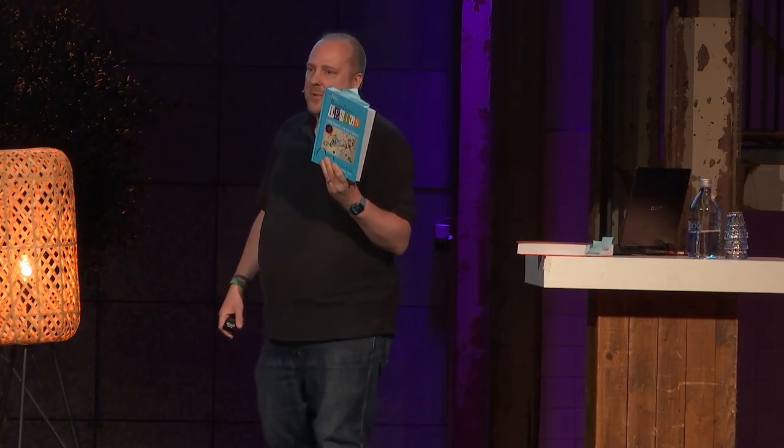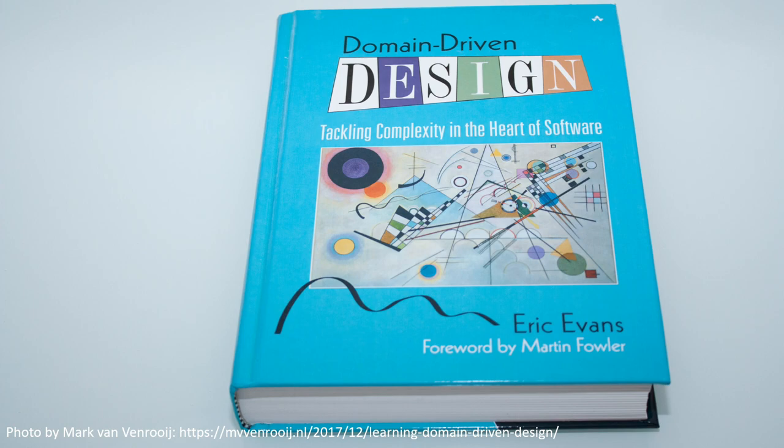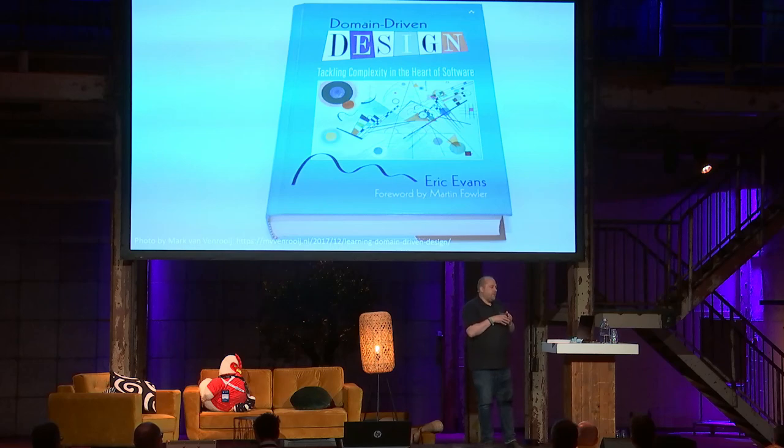Domain-driven design was first introduced — well, formalized — by Eric Evans. He was already using it for a while, and then said, 'this is interesting, I should write a book about that.' That's when people started learning about the term. The Blue Book — titled 'Domain-Driven Design: Tackling Complexity in the Heart of Software' — is where it all started. He describes a way of modeling: he had worked on many big complex projects and learned a lot about how to model your software, and put that down in this book. The problem is it's very intimidating and dry to read. To be fair, I never finished it.